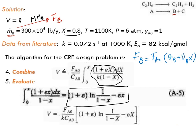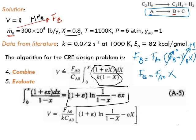Since θB equals zero and νB equals plus one, we have FB equals FA0 times X. We already have the value of X and we just calculated FB, so we can calculate FA0. Now, what about k?